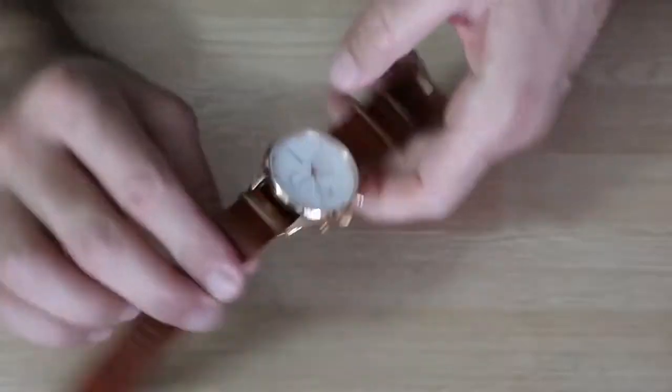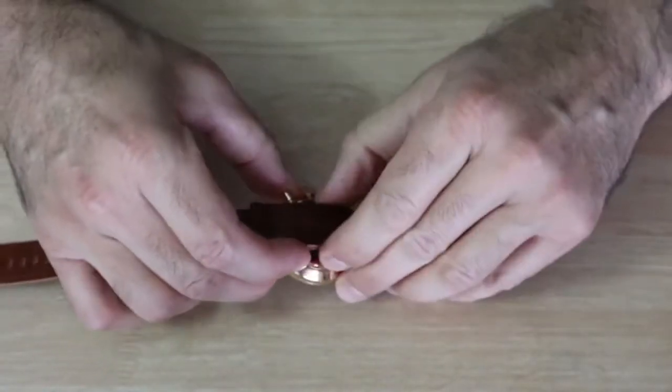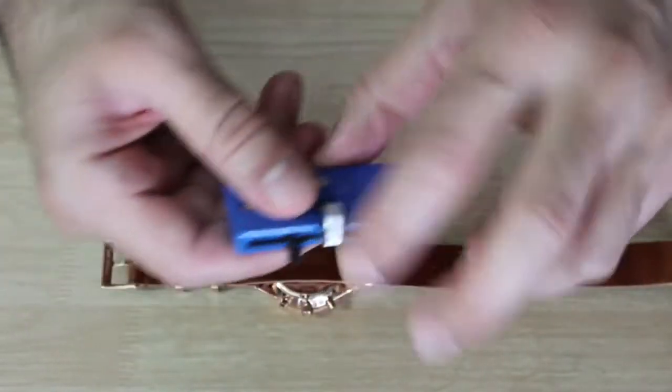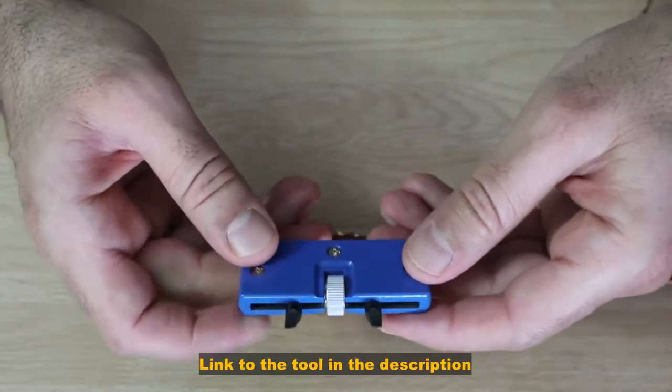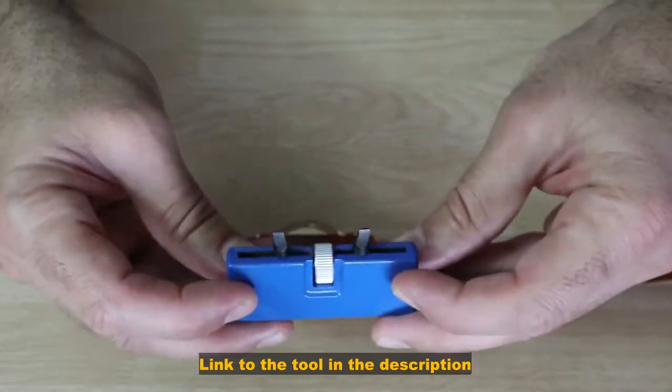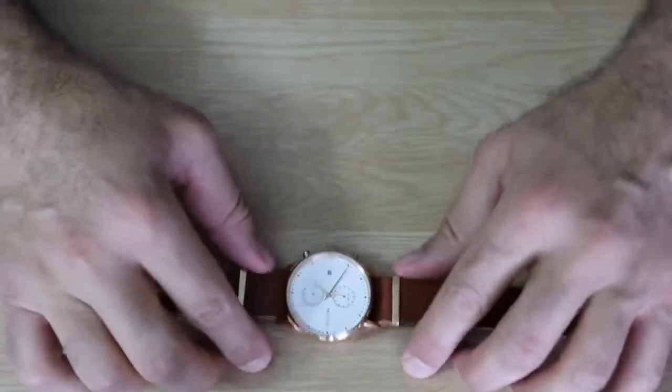This watch has a screw-on back cover and to remove it you need a specialized tool. This is the tool I'm going to be using. I'm going to put a link in the description for this tool on Amazon so that you can buy it if you want to.